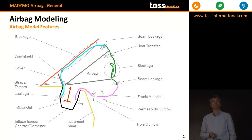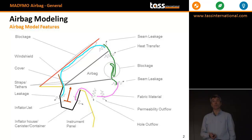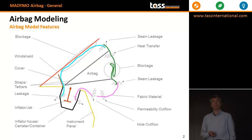Now we will start from the left top: Blockage. It's contact related. The permeability of an airbag can be high or low, or can even be completely sealed. But if there is permeability you will have outflow. If the outflow is hampered due to contact, that's what we call blockage, and then the amount of outflow will be less if there is contact.